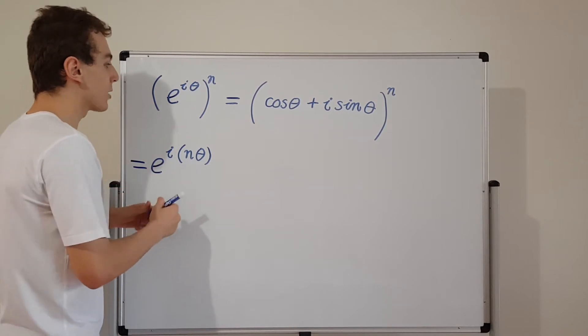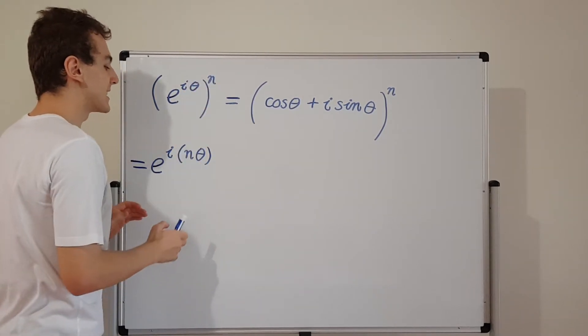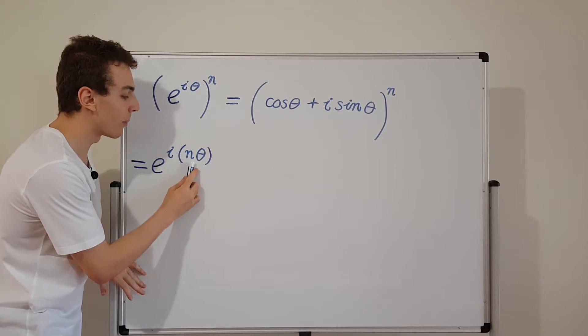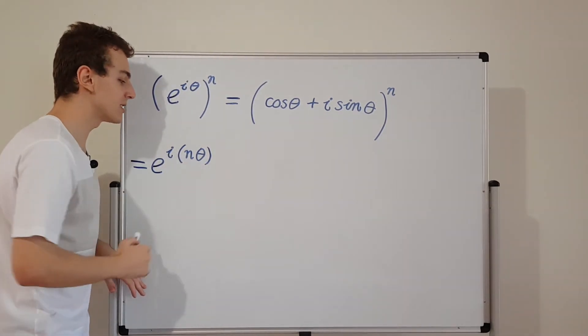So we have a new angle. Raising this to the power of n is the same as multiplying the angle by n. So we have n copies of the angle.